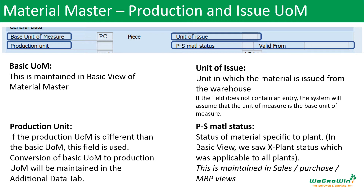Then we have the PS material status, which is the plant-specific material status — this is the status of the material in the plant. We saw cross-plant status in basic view, which is applied to all plants in the client. This plant-specific material status is maintained for a specific material. It is maintained in sales view, purchase view, MRP views, and here in the scheduling view also. A valid-from date can also be given there.